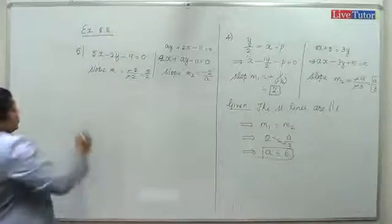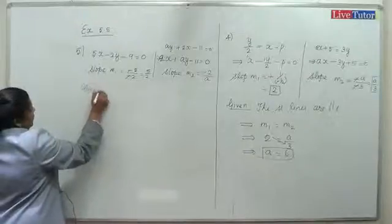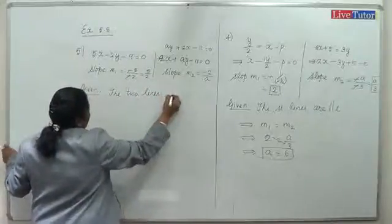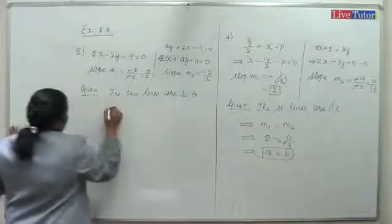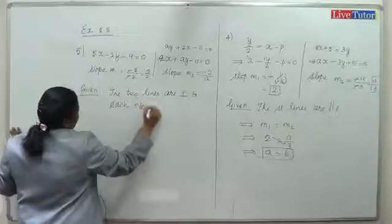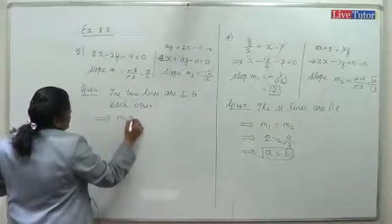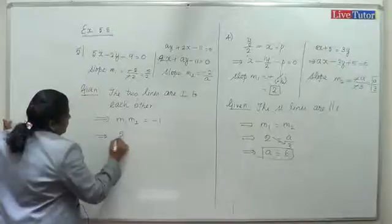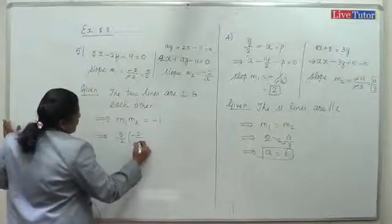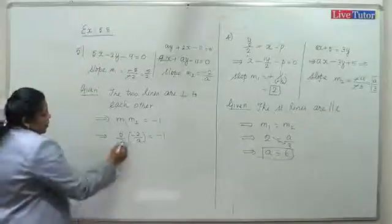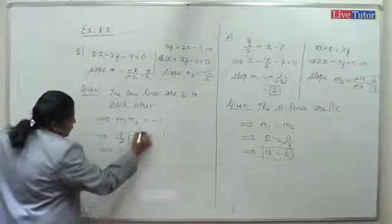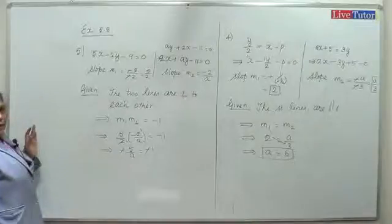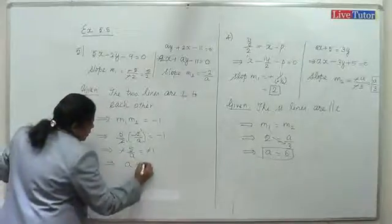The two lines are perpendicular to each other. This implies that the product of slopes equals minus 1: (5/2) times (-2/a) equals -1. The 2s cancel, giving minus 5 by a equals minus 1, therefore a equals 5.